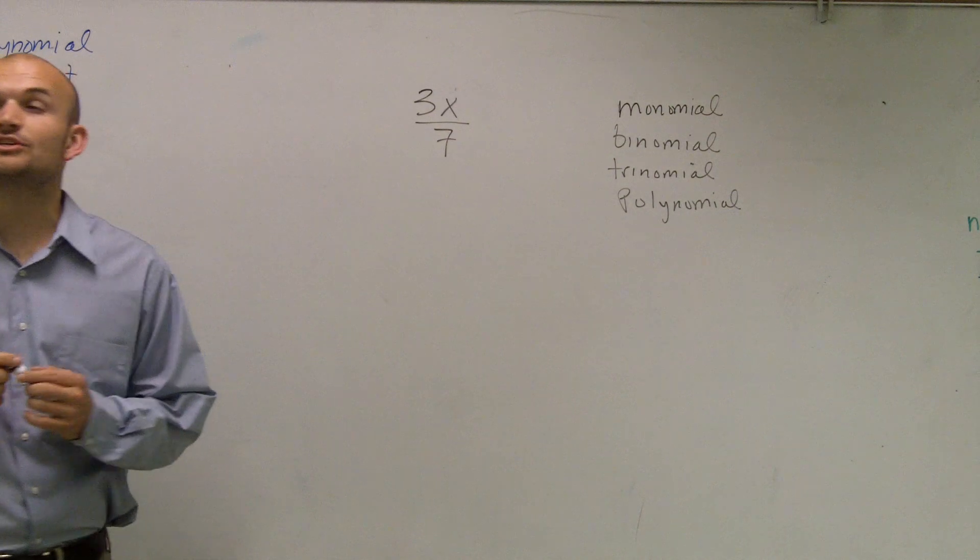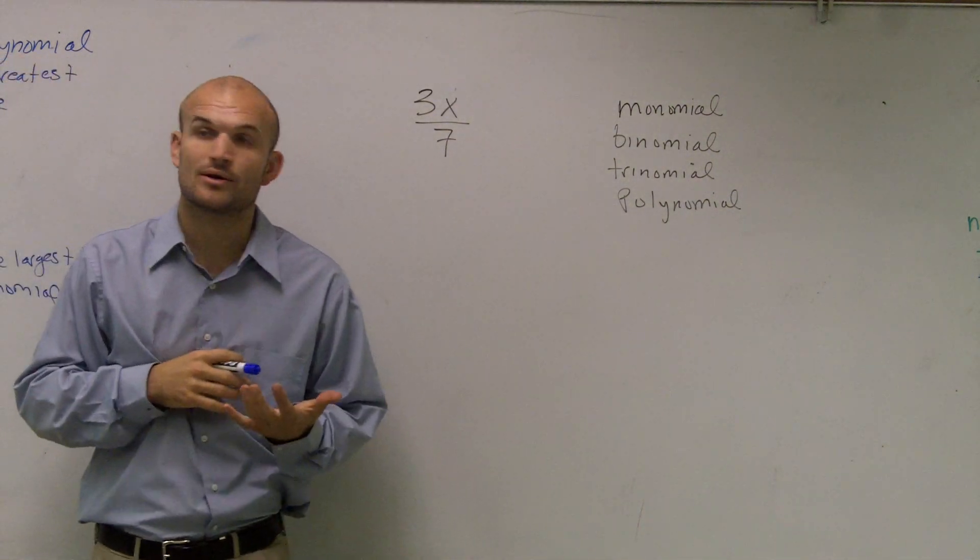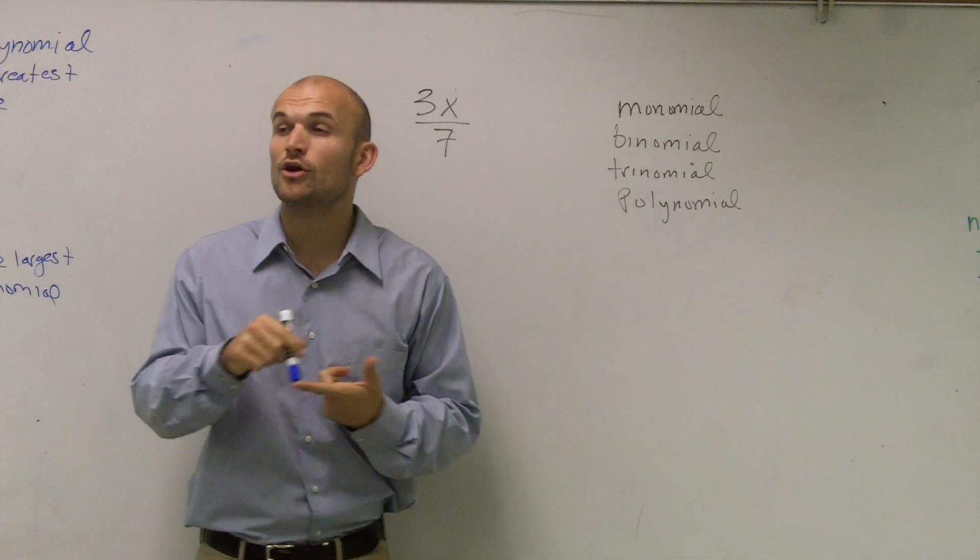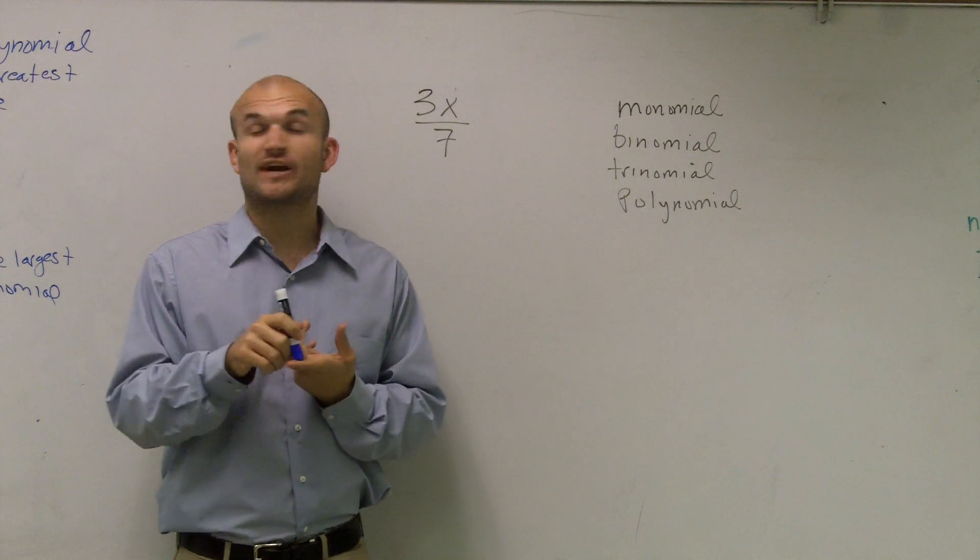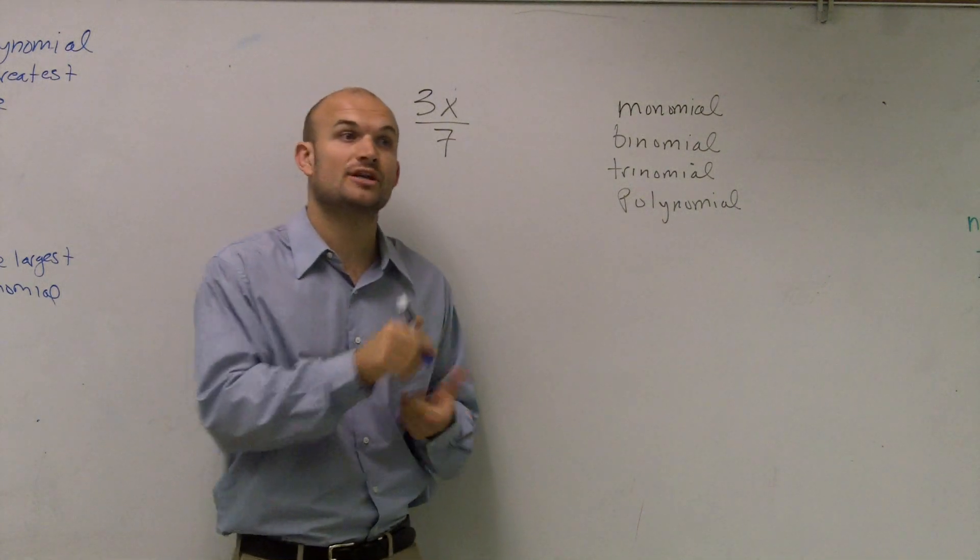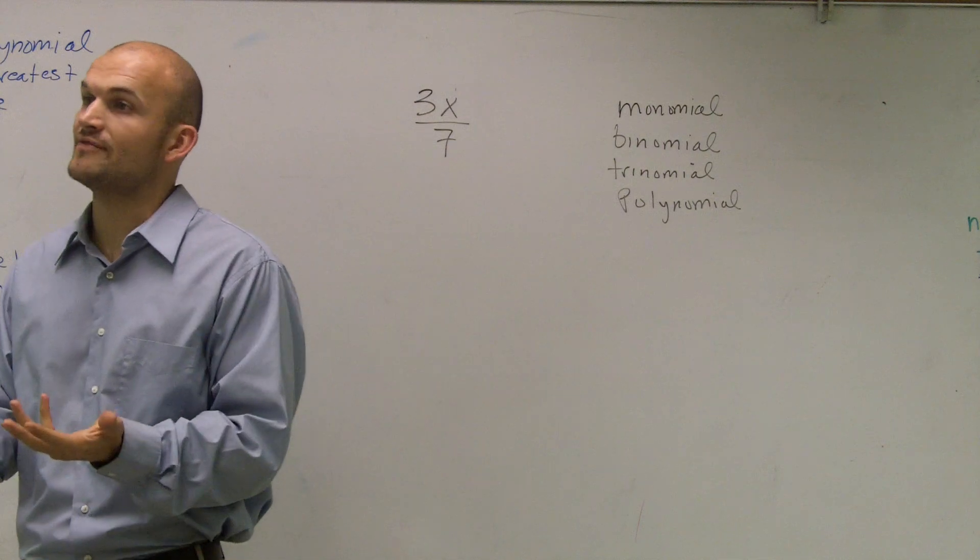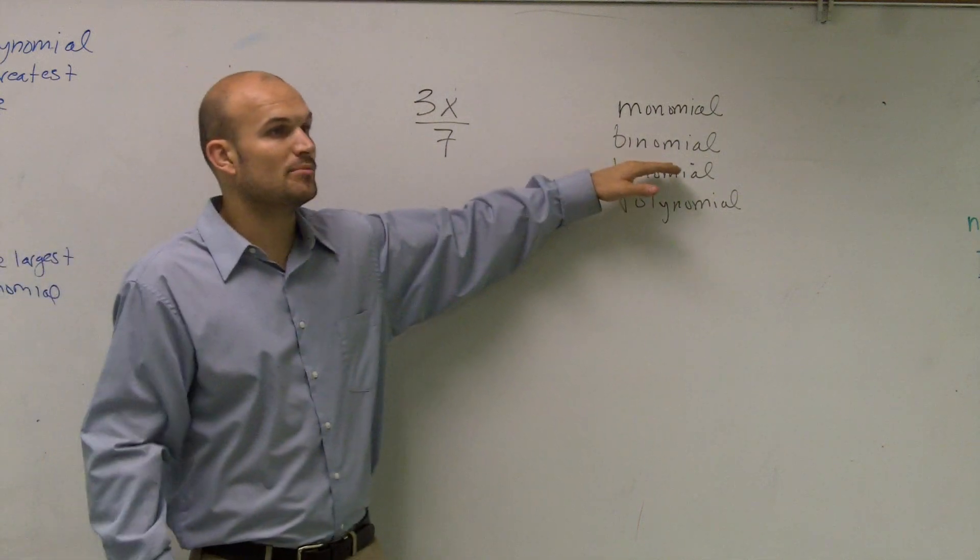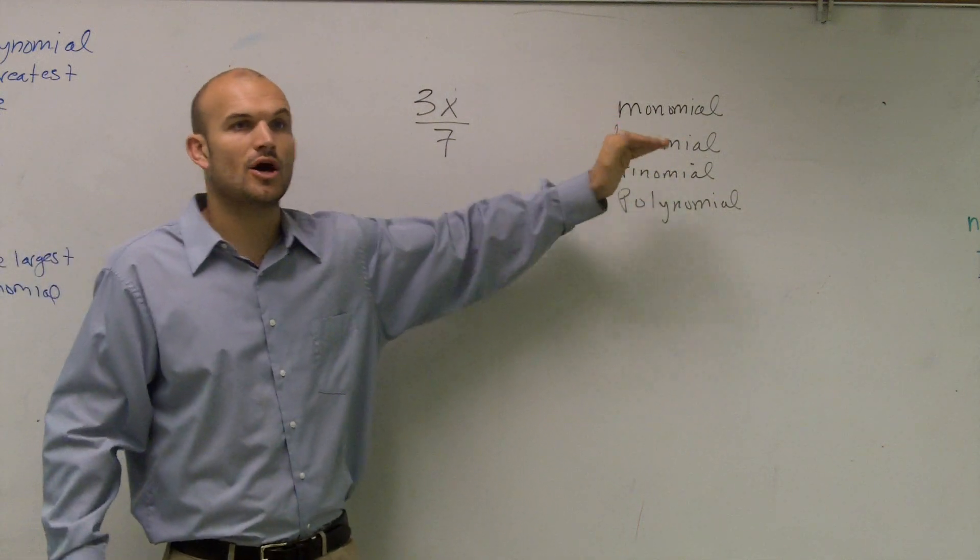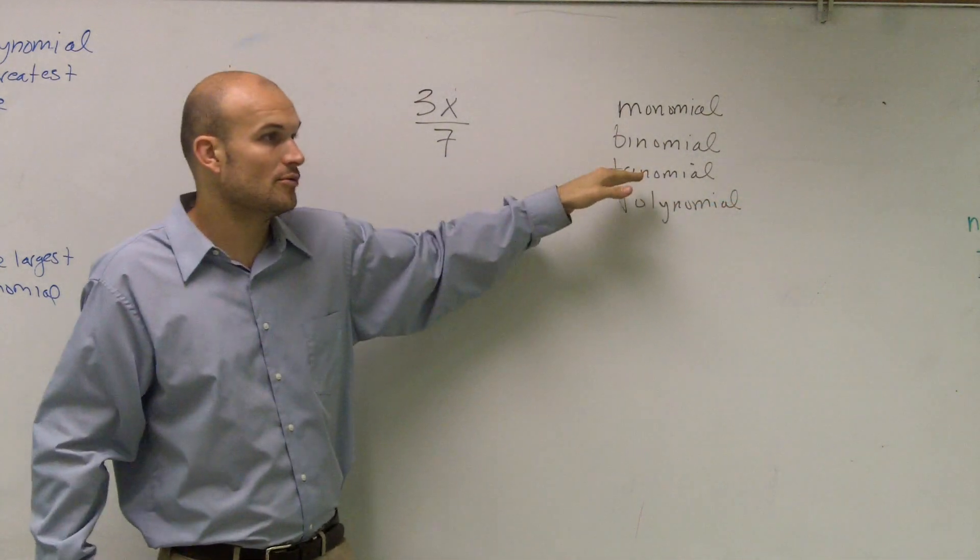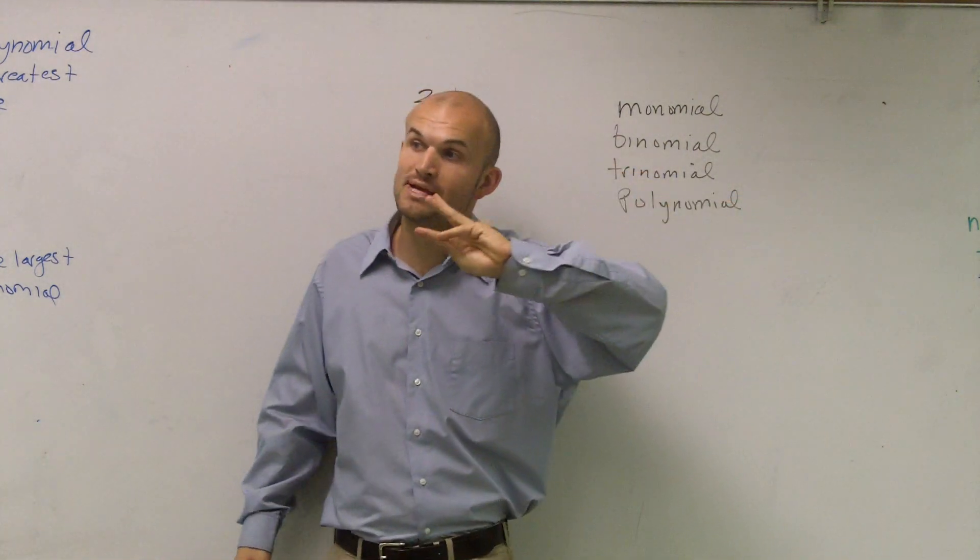And I'm just going to go through the definition here real quick, just so you can remember. A monomial is a number, a variable, or the multiplication of a number and one or more variables to a positive exponent. A binomial is the addition of two monomials. Trinomial is the addition of three monomials.